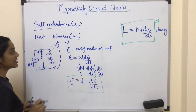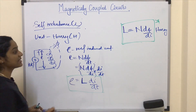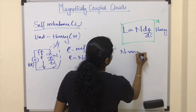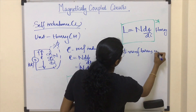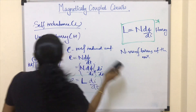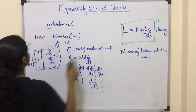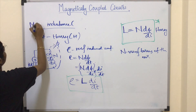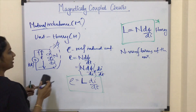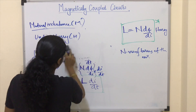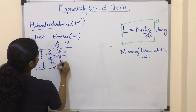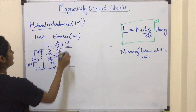That's why it is called self inductance — the self induced EMF. N is the number of turns of the coil. Next, let's look at mutual inductance. The unit of mutual inductance is also henry, and here we consider one more coil: L1 and L2.